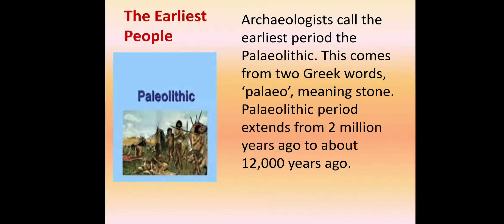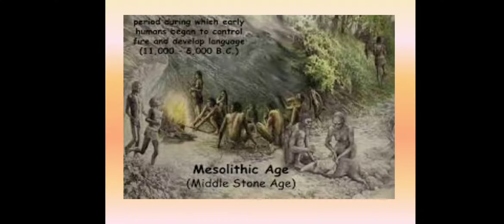Archaeologists call the earliest period the Paleolithic age. This word comes from two parts: 'paleo' and 'lithos.' The Paleolithic period extends from two million years ago to about 12,000 years ago.